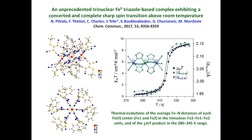One representative of these compounds is a trinuclear compound published in a 2017 paper. You can see the structure of this interesting and beautiful compound. At low temperatures, the spin value of the complex is equal to zero and the magnetic susceptibility is also zero. With increasing temperature, the spin transition takes place around 380 to 420 K, and the complex reaches a maximum spin value equal to six with magnetic susceptibility of almost nine.